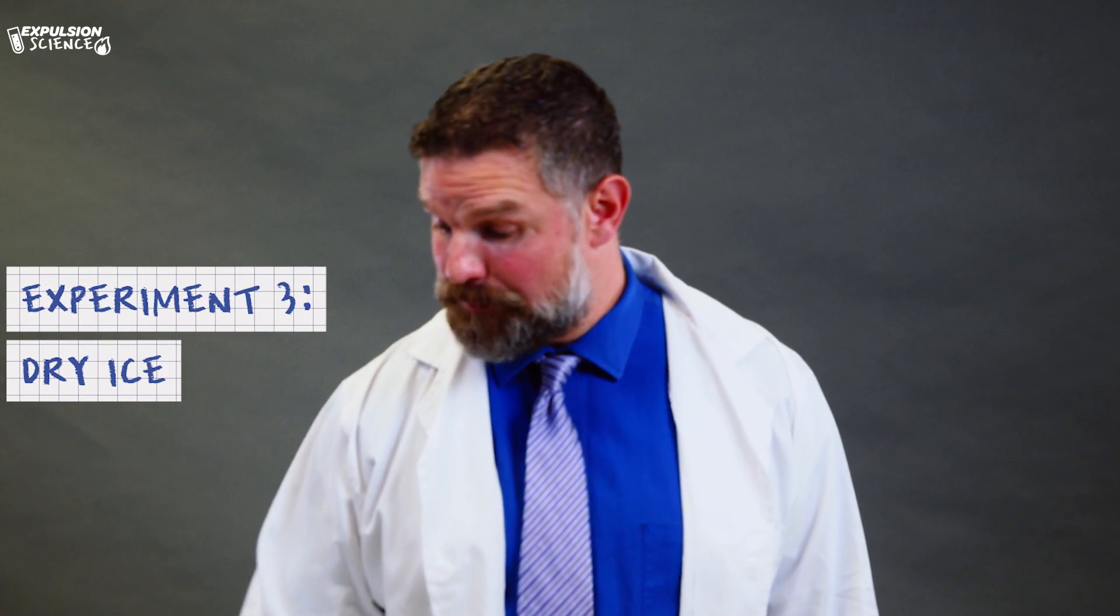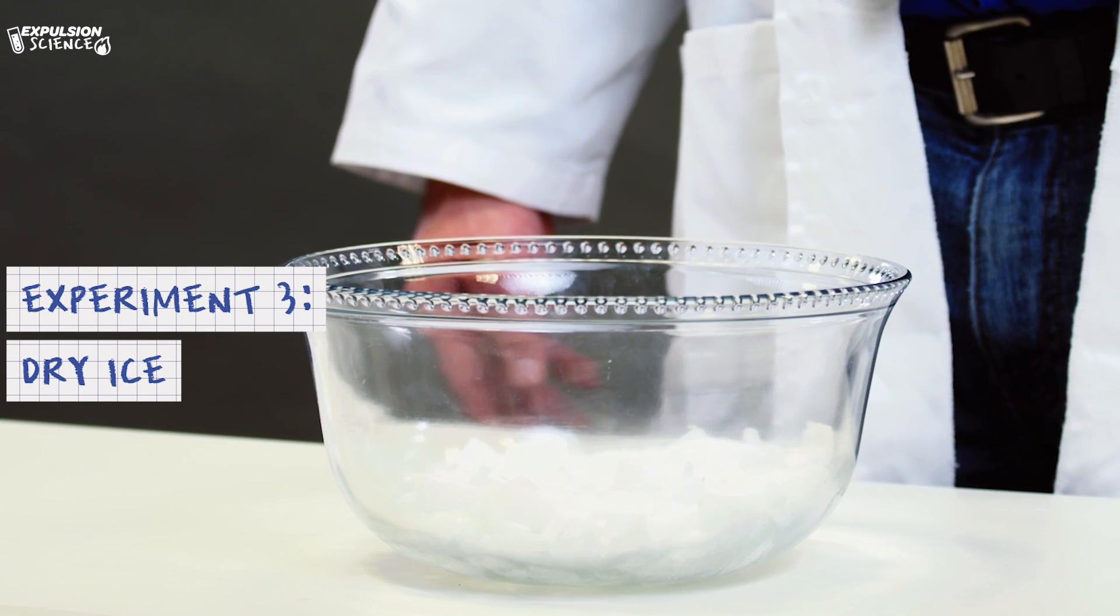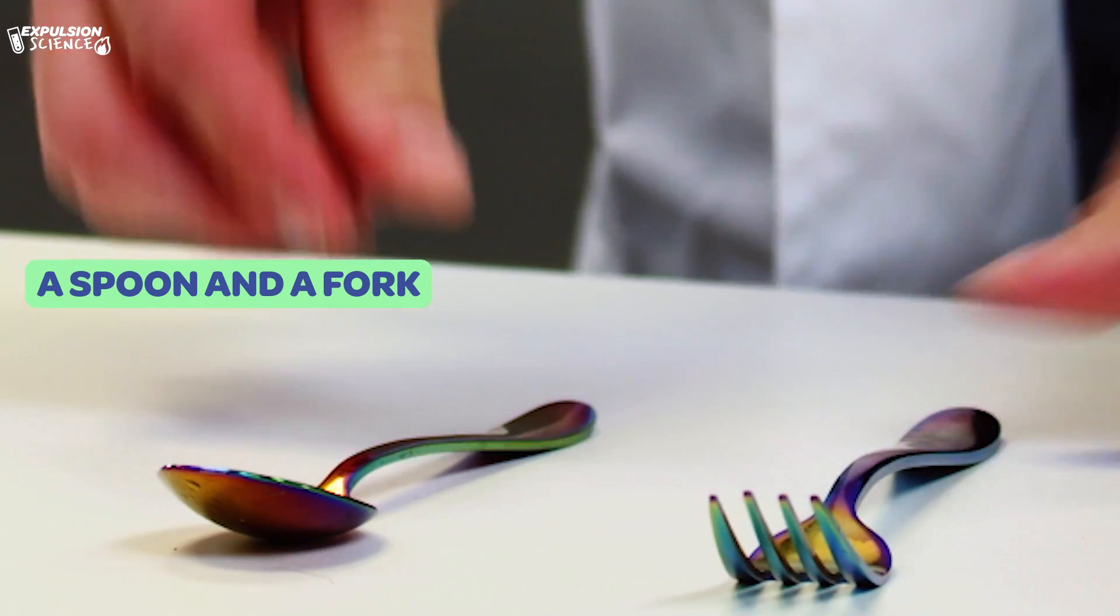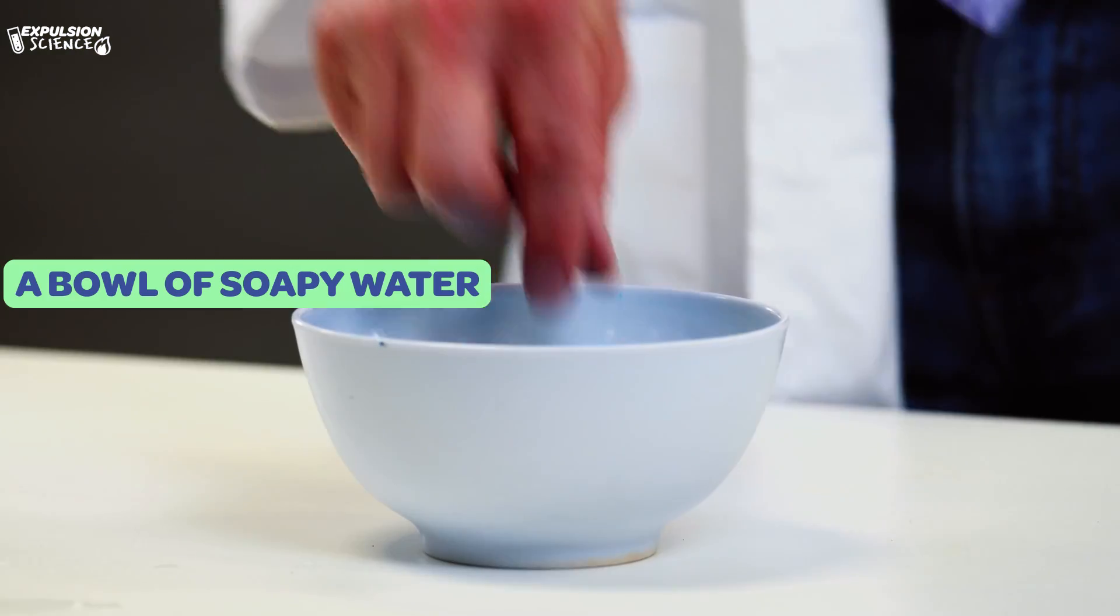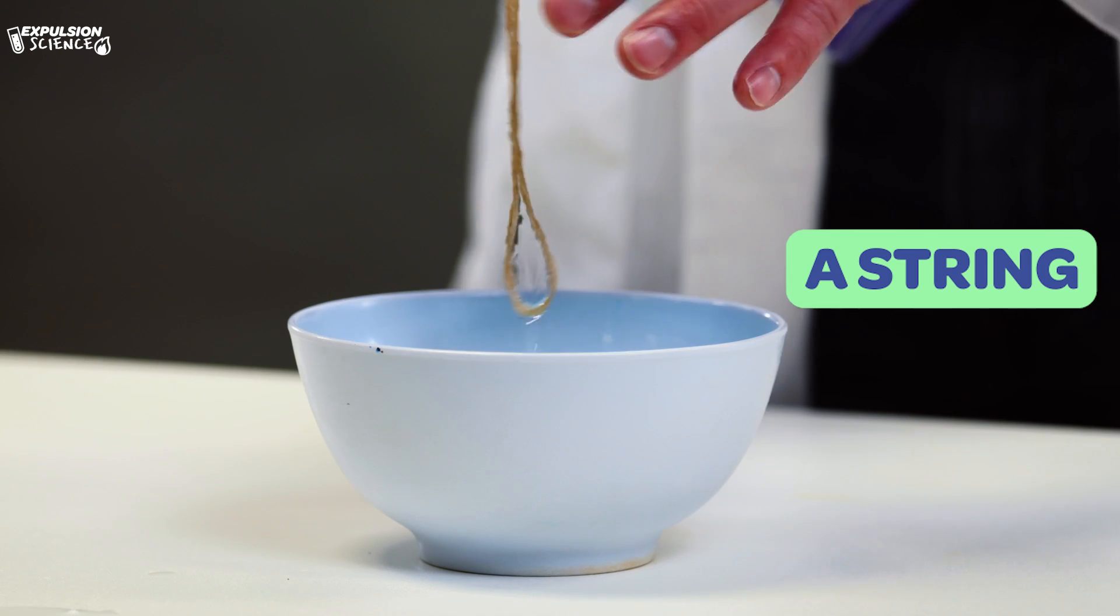All right, for this experiment we have a bowl full of dry ice, a spoon and a fork, some dish soap, a bowl full of soapy water with a string. So what's the creepiest noise that you've ever heard? Creaking of an old door or maybe an animal howling out in the woods? It's hard to beat the screaming of this dry ice when you try to touch it with metal. Have a listen.